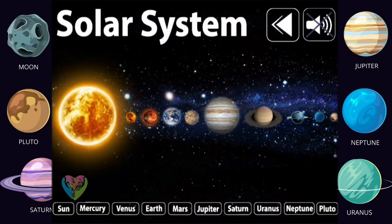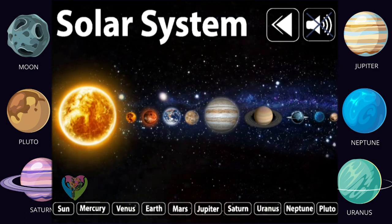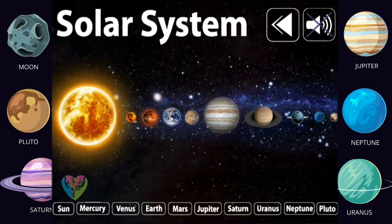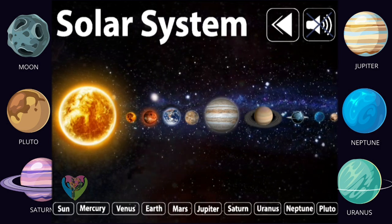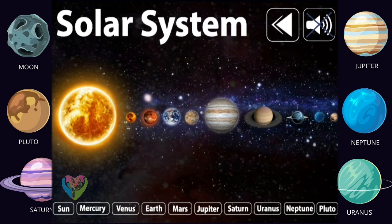The solar system is the planetary system of the Sun, which the Sun is the center, while the planets, dwarf planets, asteroids, comets, meteoroids, and small solar system bodies orbit around the Sun.